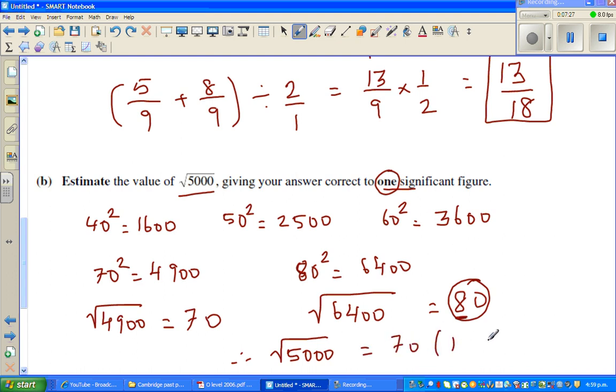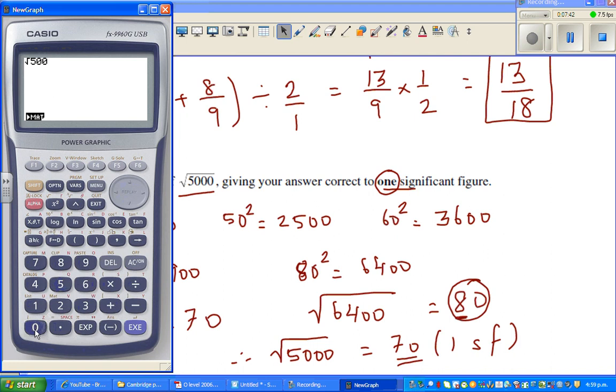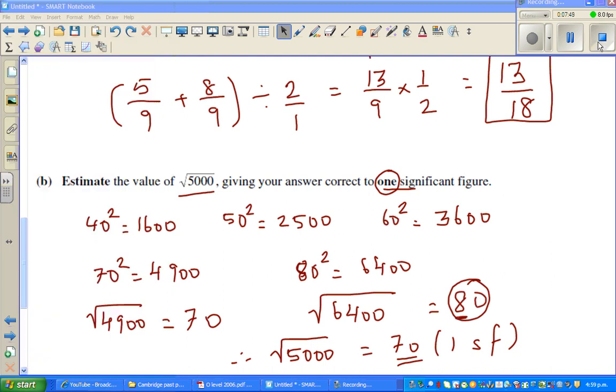So you'll write like this: one significant figure. So this is 70 point something. So I'll show this, let me just explain what I mean on a calculator. If you have a calculator to understand this, square root of 5000 is 70.7. So this is in one significant figure, this is 70. See you in the next video.